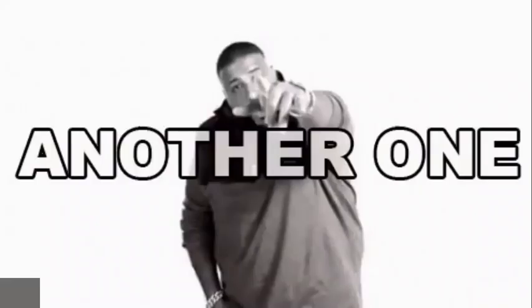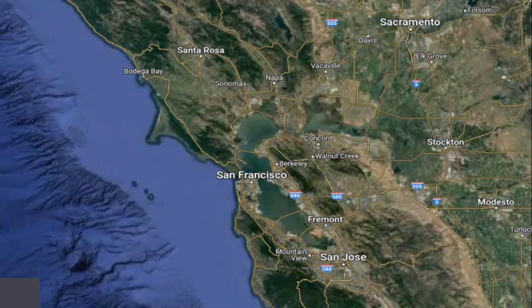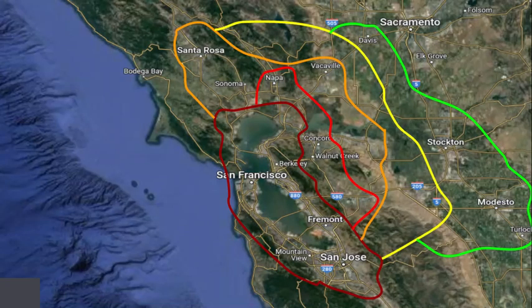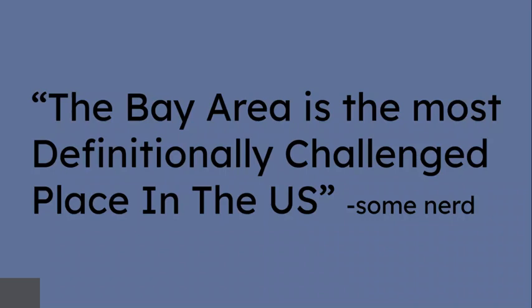The other example I alluded to earlier is none other than the Bay Area. There are tons of definitions you could use for the Bay Area, some being just around the most important bays itself, ranging all the way to even some cities in the Central Valley. Some people go as far as to say that the Bay Area is the most definitionally challenged place in the U.S.